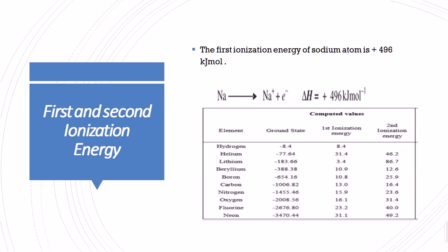What is the idea about the first and the second ionization energy? First ionization energy is the amount of energy required to remove the electron from the outermost shell. The second ionization energy is the amount of energy required to remove the second electron from the already ionized atom.